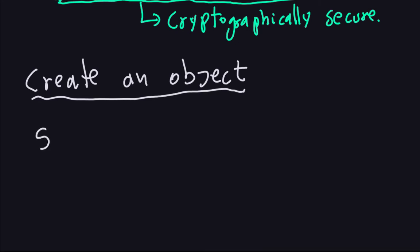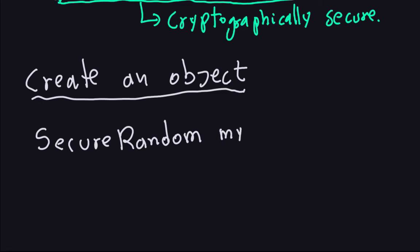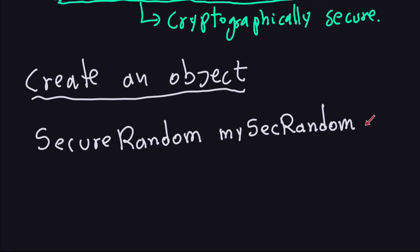To create a SecureRandom object, you say 'SecureRandom' — instead of 'Random', now you say 'SecureRandom' — followed by the name of your object, whatever you want to call it. I'm going to call mine 'mySecureRandom'. That is just the name of the object, and you can use whatever you want as long as you follow the naming conventions for variables in Java.